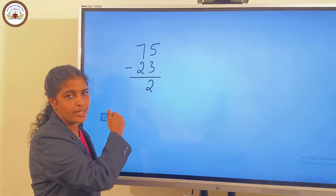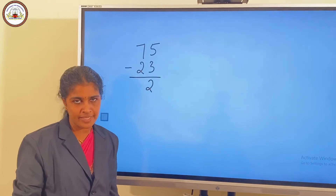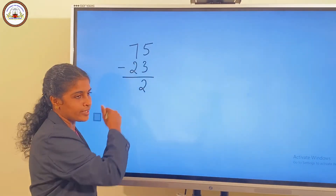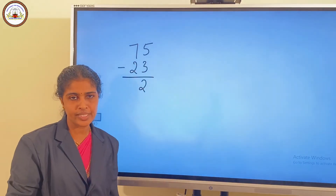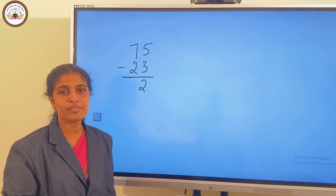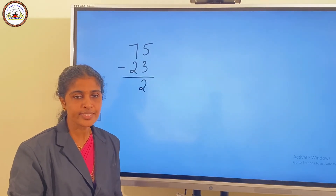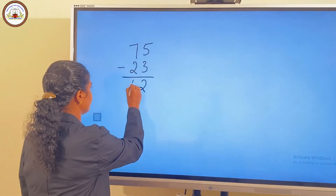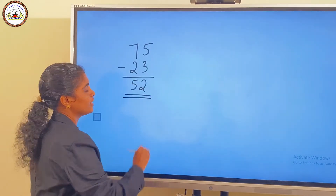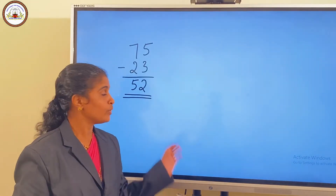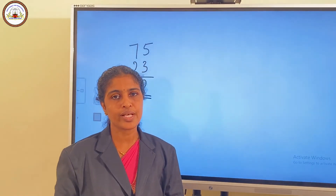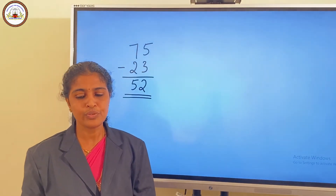Then we subtract the tens place. 7 tens minus 2 tens. 7 minus 2. 7 minus 2 is 5. So the answer is 52 — 5 tens and 2 ones. So the answer is 52.